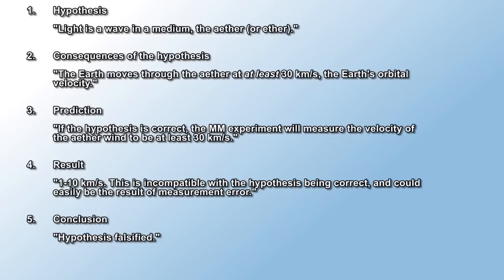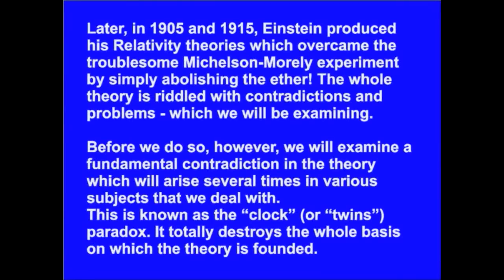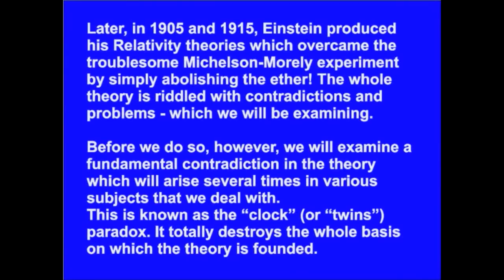Because the result was so close to zero that zero was within the expected margin of error. And it was far below the expected result. This is exactly what we would see if the ether didn't exist and we used less than perfect equipment to carry out the experiment. And you do realize that the experiment has been repeated with more sensitive equipment, right? Later in 1905 and 1915, Einstein produced his relativity theories which overcame the troublesome Michelson-Morley experiment by simply abolishing the ether. And that solved the problem and allowed physics to move forward.